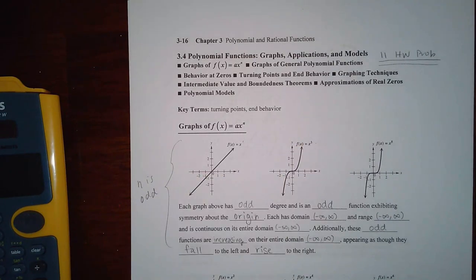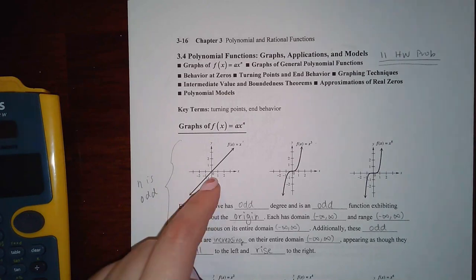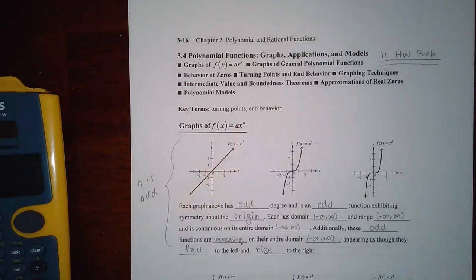The functions are increasing on an entire domain. Odd functions all do that. Okay, so they'll increase on the entire domain. And then it says appearing as though they are falling to the left and rising to the right. So it's going downward to the left and then it's going upward to the right.